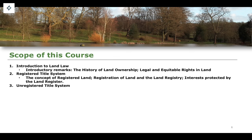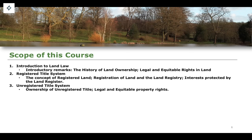We will then move on to talking about the unregistered title system, which is an increasingly shrinking area of the law. The long and short of it is that where a conveyance or disposition of unregistered title takes place, it automatically becomes registered land. As more and more land enters the Land Registry, the amount of unregistered title in England and Wales is shrinking. We'll cover ownership, transfer, and legal and equitable property rights within the unregistered title system.